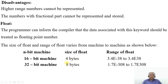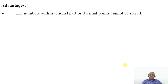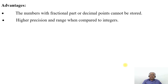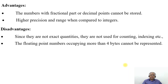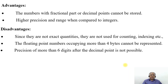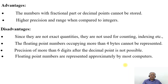Similarly for a 32-bit machine, the size is 8 bytes and the range is 1.7 × 10^-308 to 1.7 × 10^308. The advantage of float over integer is that numbers with fractional or decimal parts can be stored, and it offers higher precision and range compared to integers. Disadvantages: since they are not exact quantities, they are not used for counting or indexing. Floating point numbers occupying more than 4 bytes cannot be represented, and precision of more than 6 digits after the decimal point is not possible. Floating point numbers are represented approximately by most computers.